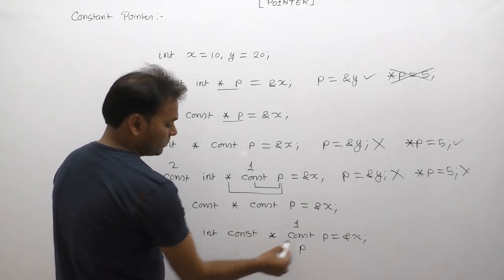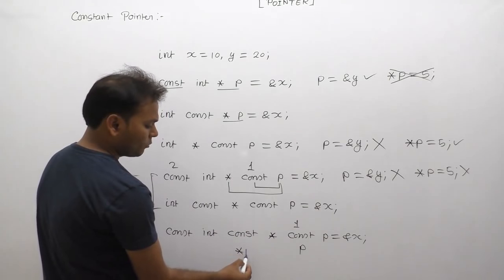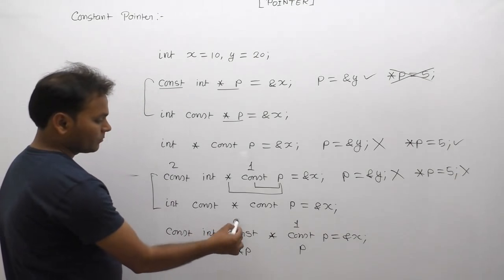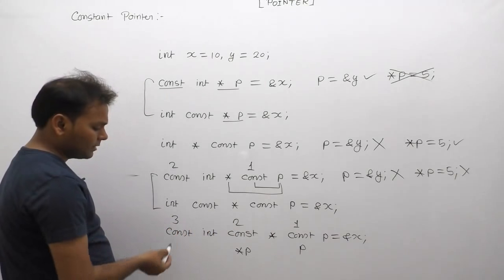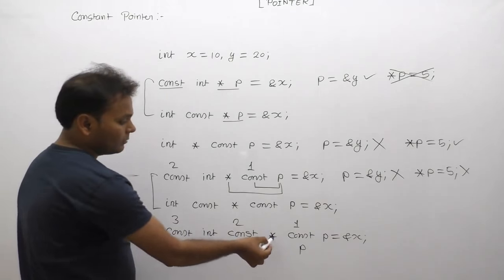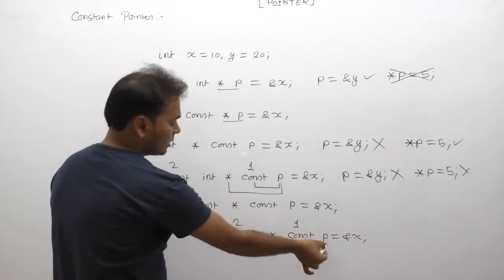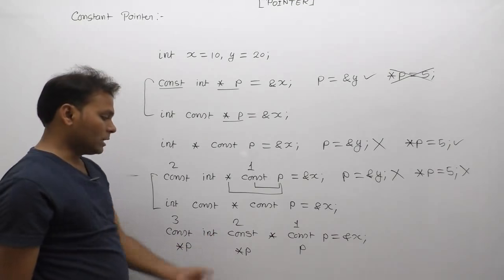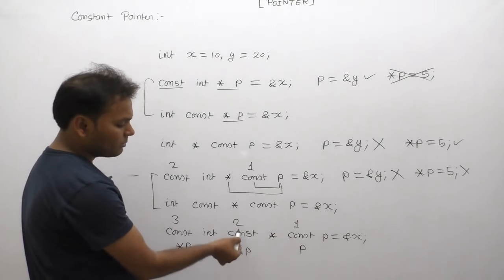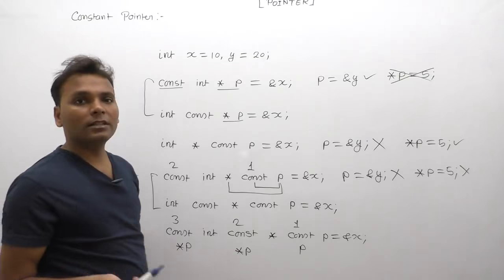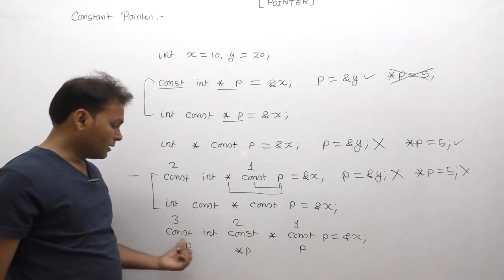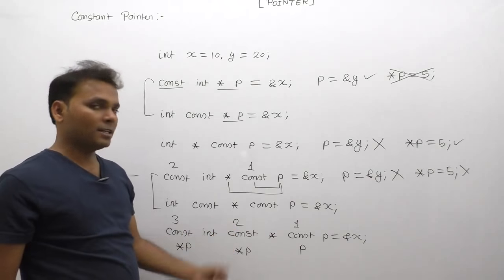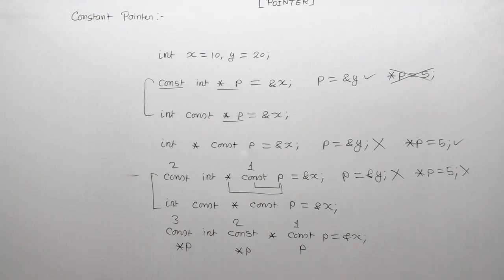In the last case, reading right to left: the first const applies to p, making p a constant. The second const applies to star p, making star p a constant — same as the third constant. The third const again applies to star p, but star p is already identified as constant, so applying the same pattern a second time is redundant — a particular position can only have one const applied one time.